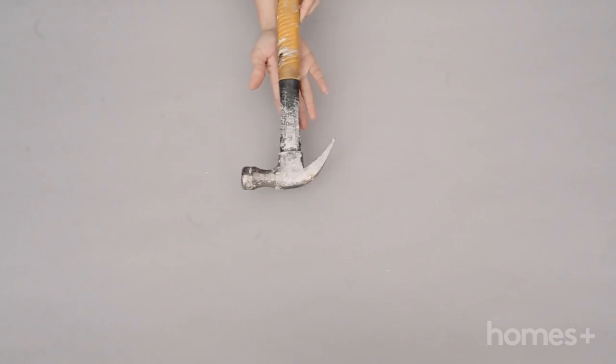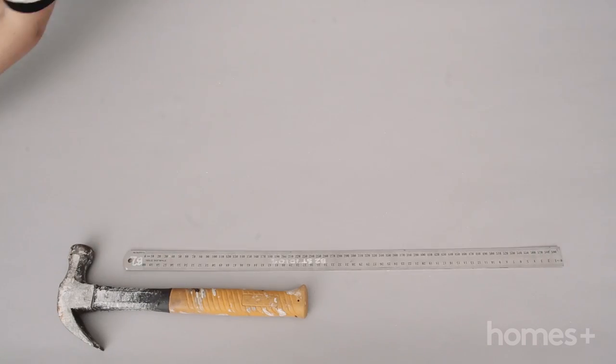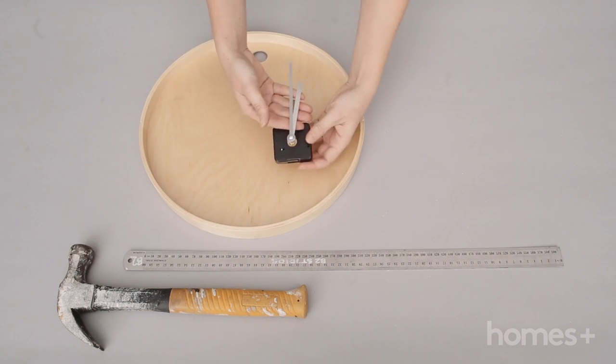You will need a hammer, a ruler, an IKEA PS 2014 tray, a clock mechanism and hands,